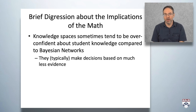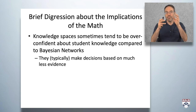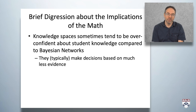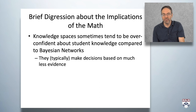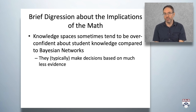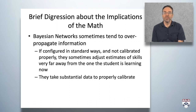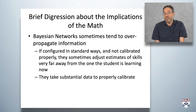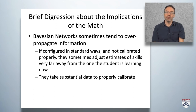Now, a brief digression about the implications of the math. Knowledge spaces, because of the way they're set up mathematically, sometimes tend to be overconfident about student knowledge compared to Bayesian networks — they typically make decisions based on much less evidence, taking one correct answer as evidence that you know a skill. As we know from guessing and slipping, this means knowledge spaces can be quite efficient for curricular placement, but they can also make mistakes. Bayesian networks have a different flaw: they sometimes tend to over-propagate information. If configured in standard ways and not calibrated properly, they'll sometimes adjust estimates of skills very far away from the one the student is currently learning.